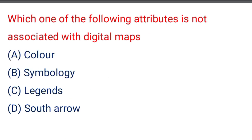Next question: which one of the following attributes is not associated with digital maps — option A: color, option B: symbology, option C: legends, option D: south arrow. The correct answer is option D: south arrow.